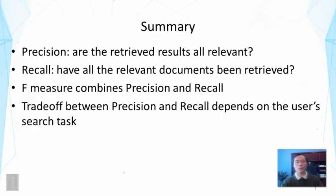To summarize, we talked about precision, which addresses the question: are the retrieved results all relevant? We also talked about recall, which addresses the question: have all the relevant documents been retrieved? These two are the two basic measures in text retrieval evaluation. They are useful for many other tasks as well. We talked about the F-measure as a way to combine precision and recall. We also talked about the trade-off between precision and recall. And this turns out to depend on the user's search tasks. And we'll discuss this point more in a later lecture.